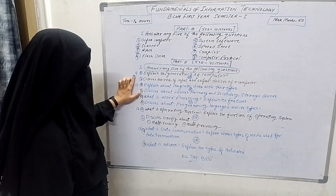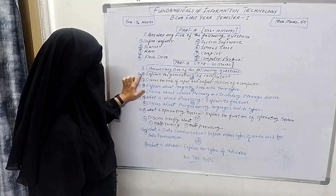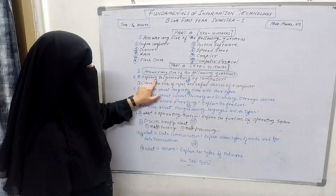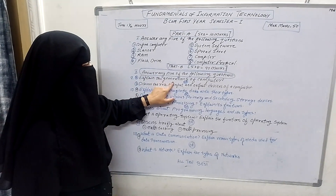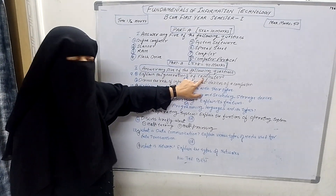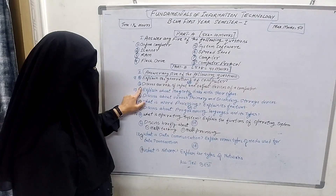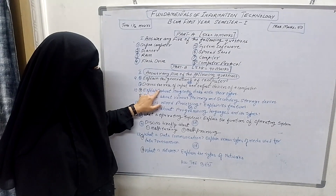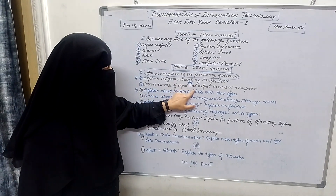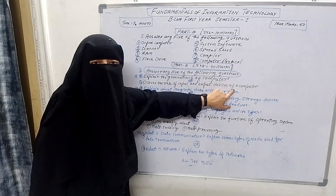Question number 9: A — Explain the generation of computers. B — Discuss the role of input and output devices of a computer.